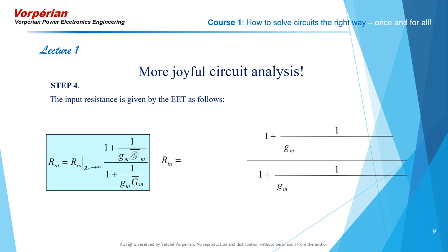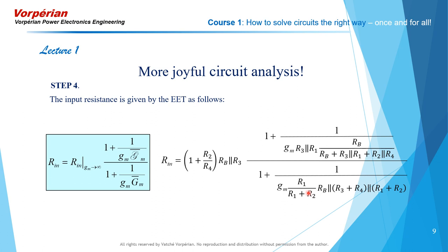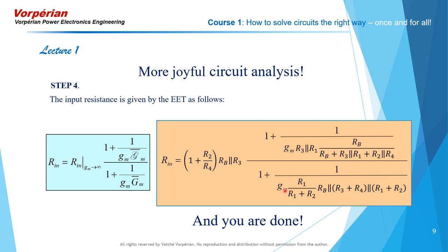Step four: now substitute those three independent calculations in the expression of the extra element theorem. Here comes the input resistance Rn with GM infinity. Here comes the inverse gain with respect to GM with the input port shorted. And here comes the inverse gain with respect to GM with the input port open. And you're done. Four simple steps and none of that horrendous algebra that you saw in the previous video. This is the complete analytical answer of the input resistance with GM as a parameter. For large values of GM, this is the dominant behavior of the input resistance, while this is only a correction factor.